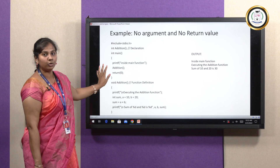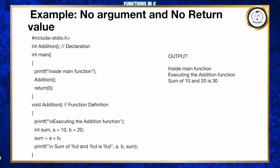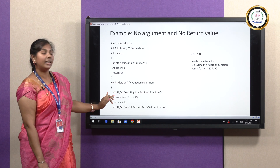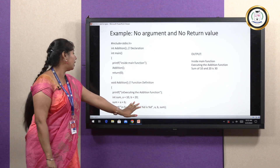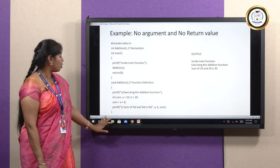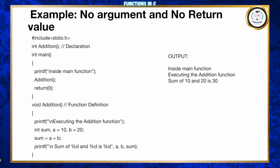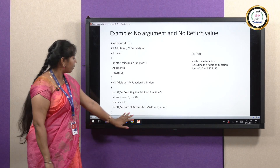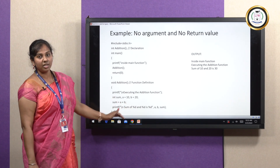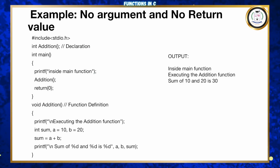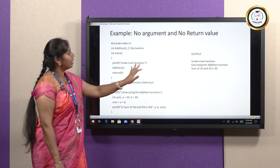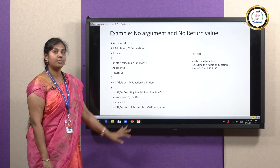This means I am not passing any argument to the addition function, nor will I get back any value from it to the main function. I just call it, the function executes, and then control returns to the main function. Inside the addition function, there is a printf statement printing 'executing the addition function', then three variables: sum, a equal to 10, and b equal to 20. The addition of a and b is performed and printed inside the addition function itself. After the function executes, control returns to main and return 0 executes. The return type is void, meaning no return value and no arguments.